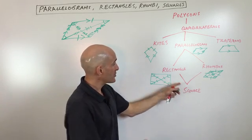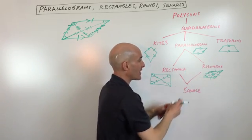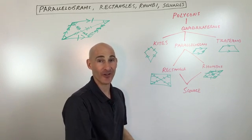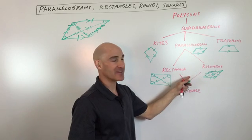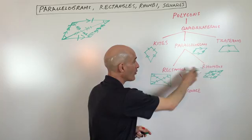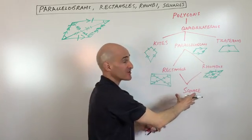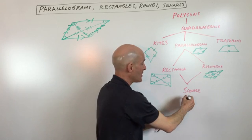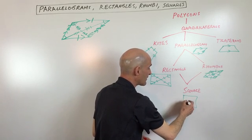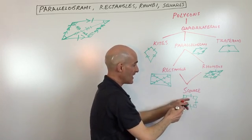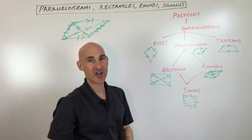If we go down to square, a square is actually a combination of a rectangle and a rhombus — some teachers joke that it's a 'rom-tangle.' A square has all the properties of the ones above it on this chart. It has the four right angles like a rectangle, it has the four congruent sides like a rhombus, and then all the other properties we talked about above.